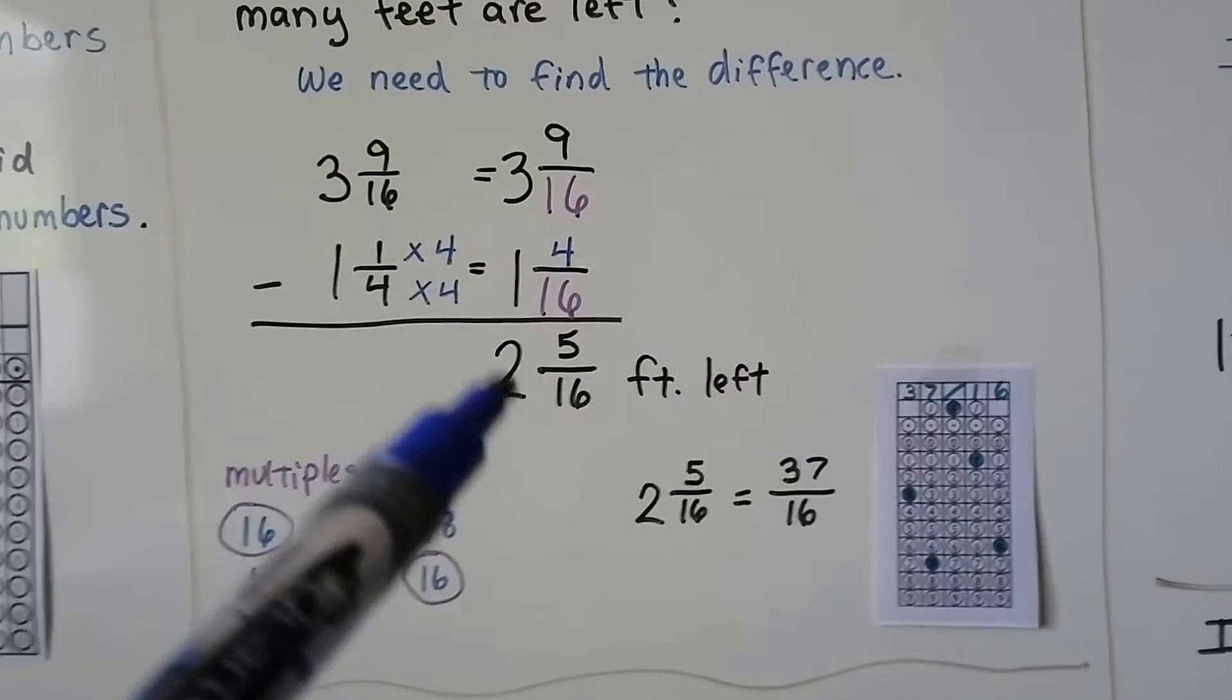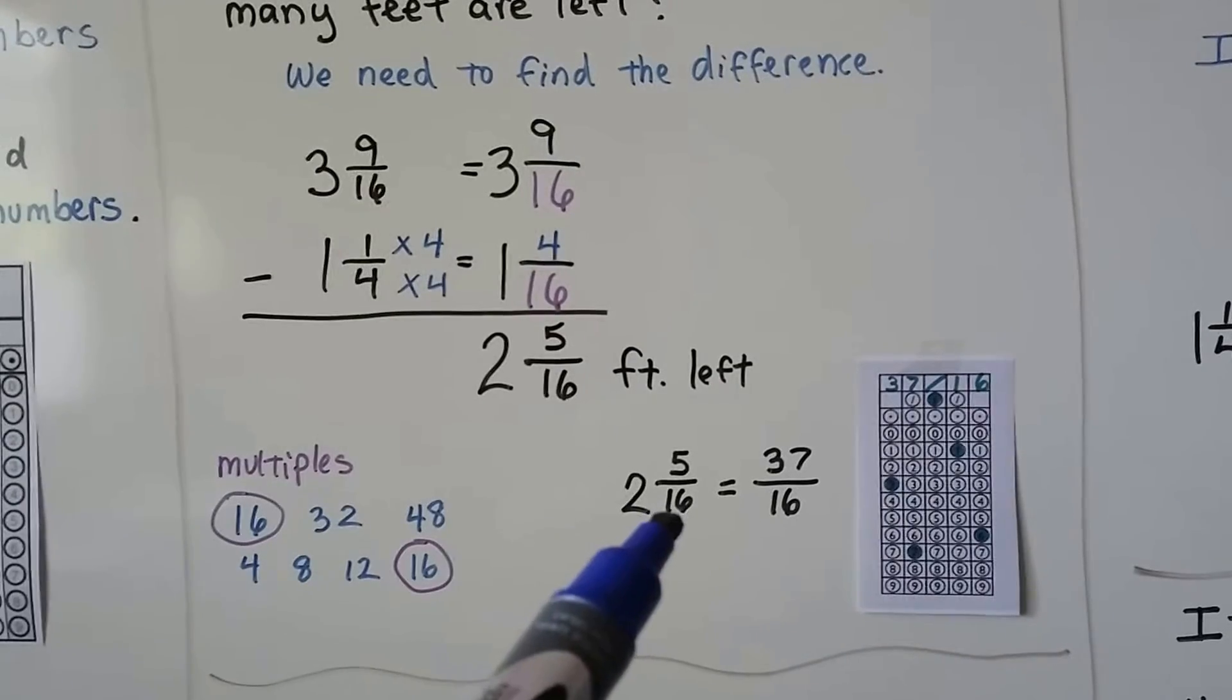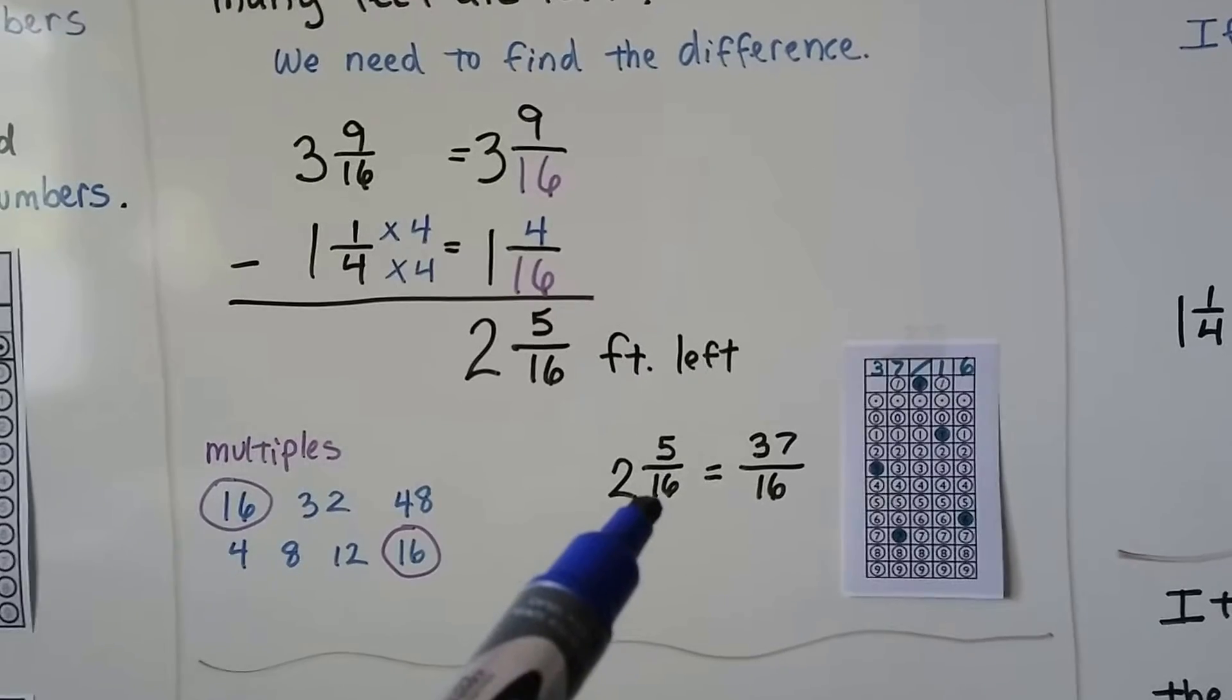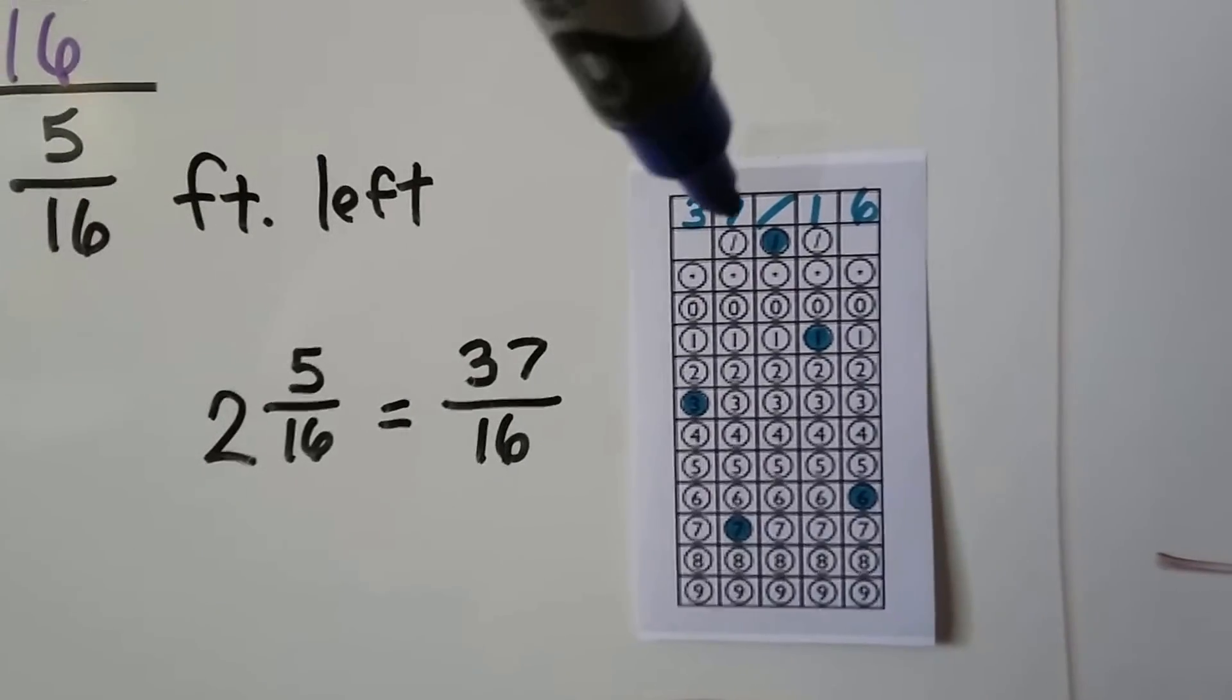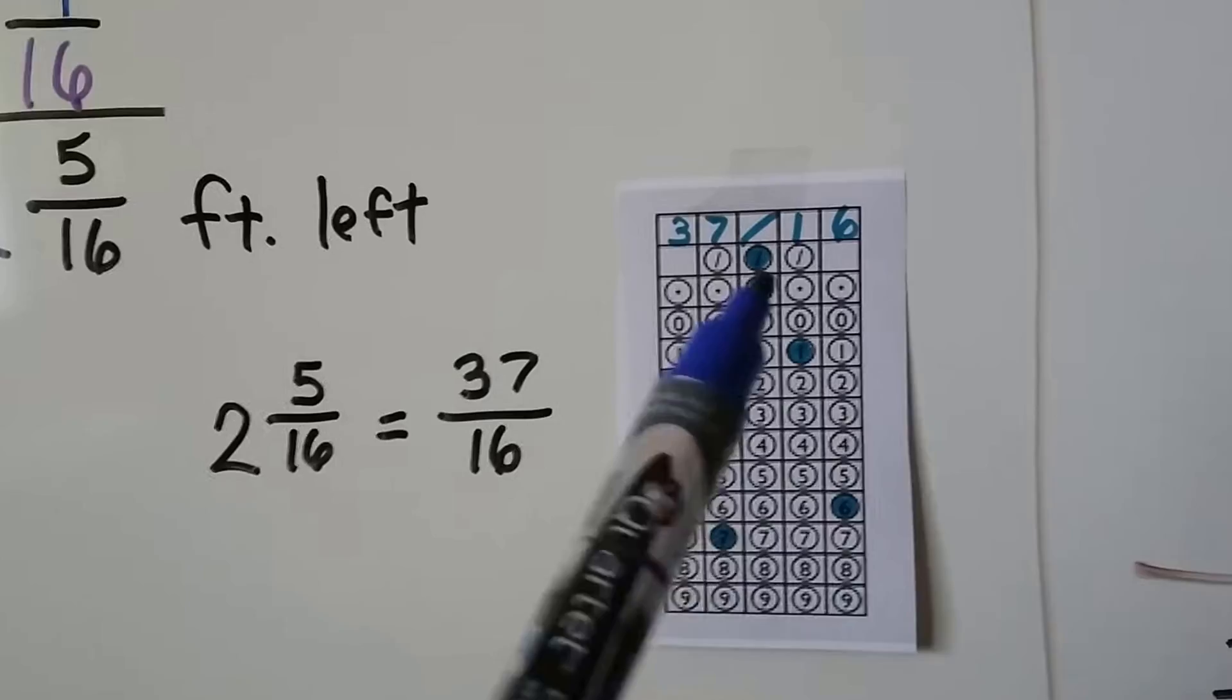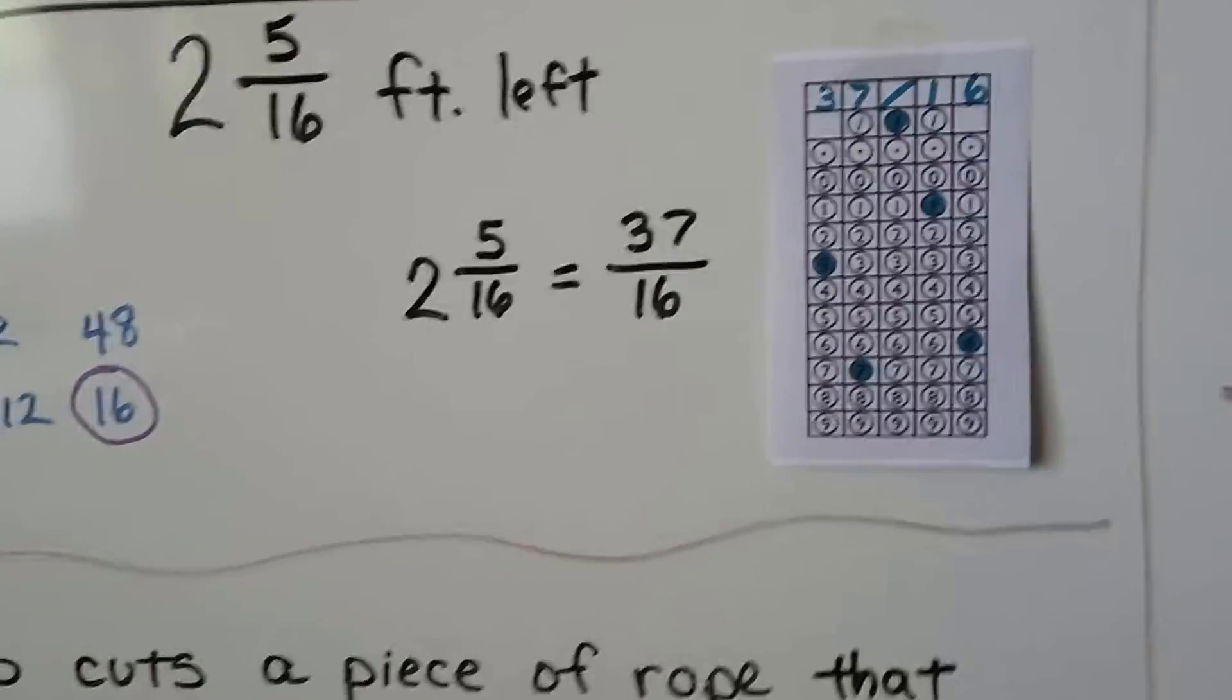We have 2 and 5/16s as our answer, but we cannot write that into the grid. It's a mixed number. We have to convert this to an improper fraction. 2 times 16 is 32, plus 5 is 37, and we keep it over that denominator. We have 37 sixteenths, and that's how we fill in the grid. The 3, the 7, the slash, the 1, the 6, and we fill in those circles, even for the slash.